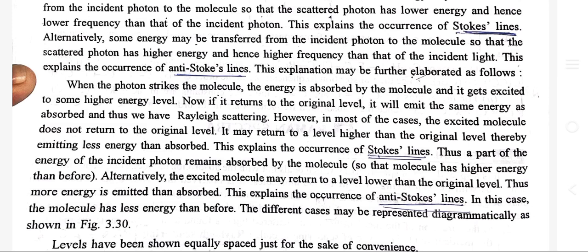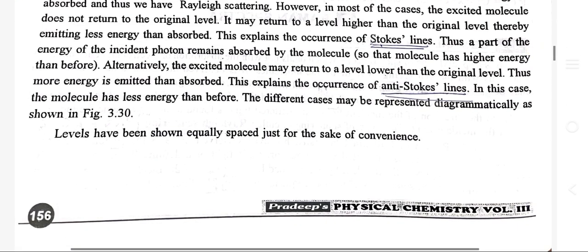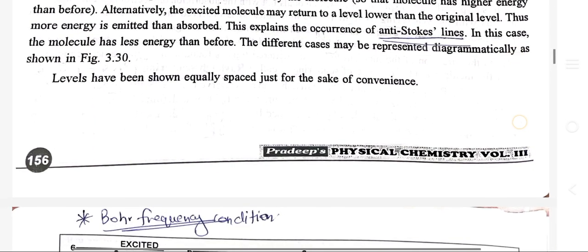When the photon strikes the molecule, the energy is absorbed and the molecule gets excited to a higher energy level. If it returns to the original level, it emits the same energy as absorbed, giving Rayleigh scattering. However, in most cases the excited molecule does not return to the original level. If it returns to a level higher than the original, it emits less energy than absorbed — this explains Stokes lines. If it returns to a level lower than the original, more energy is emitted than absorbed, explaining anti-Stokes lines.